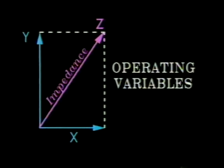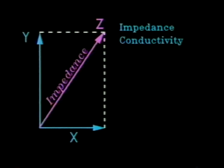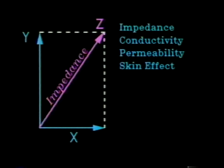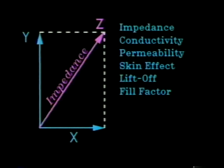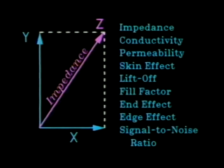Some of the operating variables are coil impedance, electrical conductivity, magnetic permeability, skin effect, liftoff, fill factor, end effect, edge effect, and signal to noise ratio.